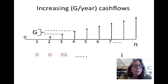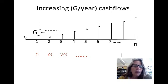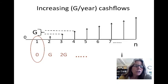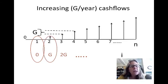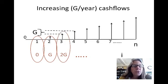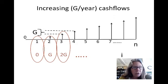The other cash flow pattern is the gradient, where the payment increases by a value G each year. In year one the cash flow is zero, in year two it's G, in year three it's 2G, and it continues increasing by G each year until year N.